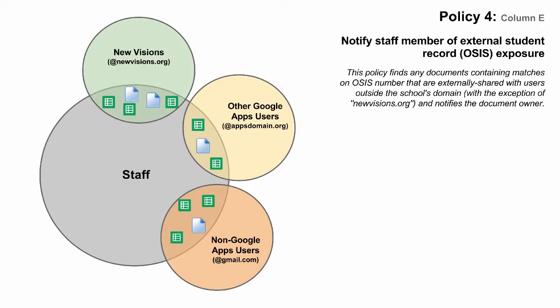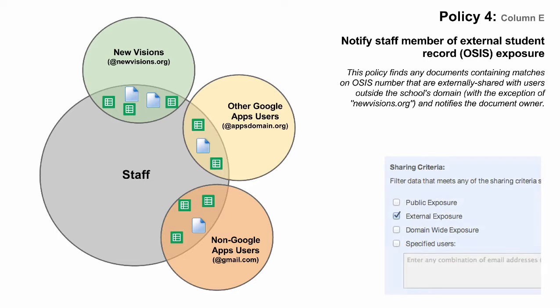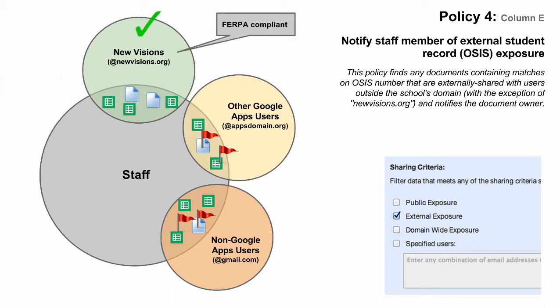Like Policy 3, the fourth policy does not automatically reverse sharing. Instead, it automates daily emails to staff, prompting them to review a list of documents that may contain policy violations. It is then the responsibility of staff to take action accordingly. In this case, CloudLock is filtering for documents that are externally exposed and contain student OSIS numbers. Documents shared outside your domain generally fall into three categories: documents shared with New Visions staff members, documents shared with other Google Apps users, and documents shared with non-Google Apps commercial Google accounts. This policy is set up to ignore any documents that are shared with NewVisions.org accounts, because you can be confident that these shares are FERPA compliant. From a technical perspective, this is accomplished by adding the NewVisions.org domain to the sharing whitelist when creating the policy.